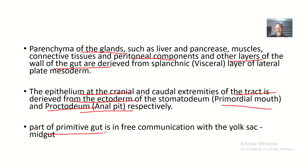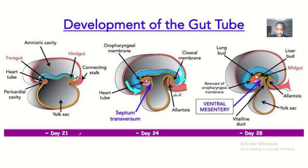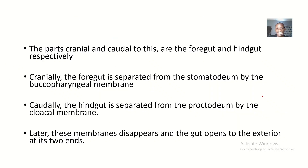Part of the primitive gut is in free communication with the yolk sac. This part of the primitive gut that is in free communication with the yolk sac is the midgut. You can see there is free communication between the midgut and the yolk sac as the embryo is developing.